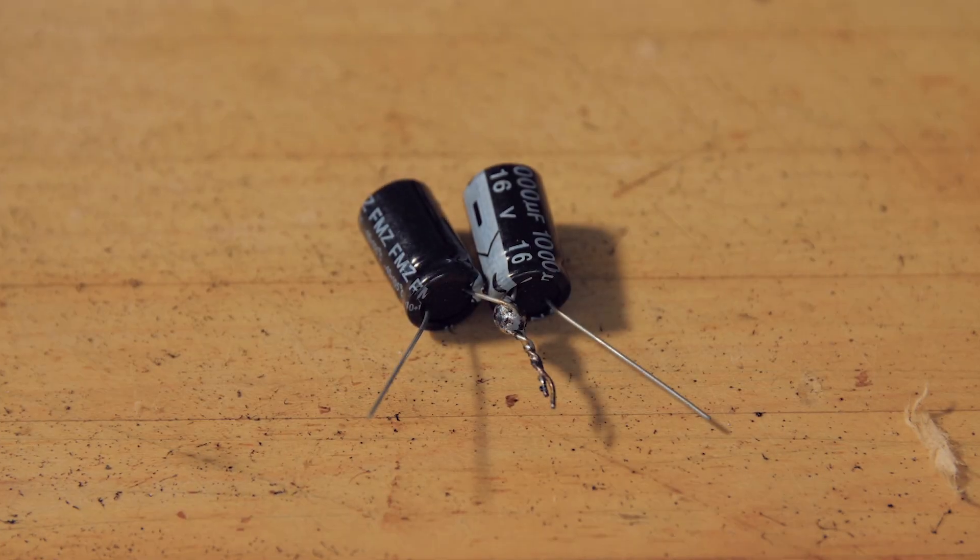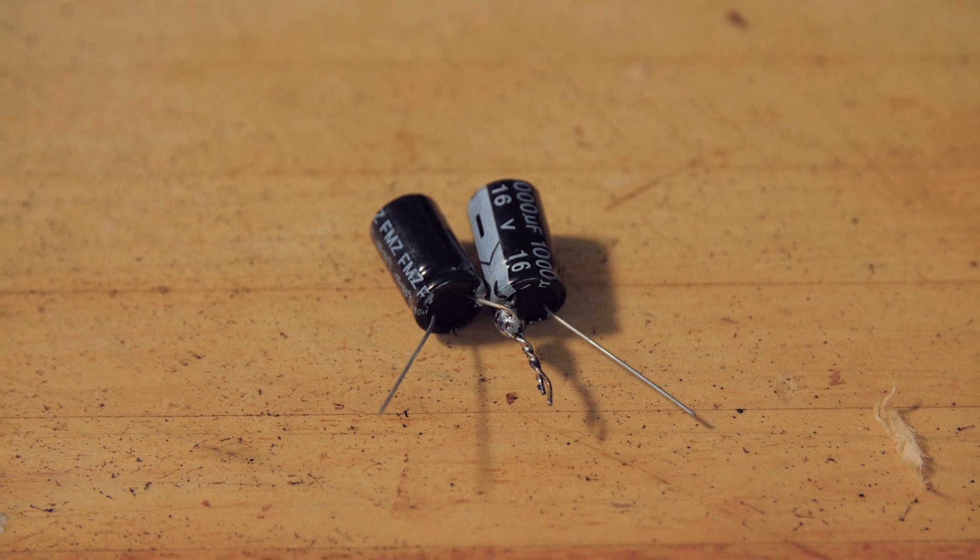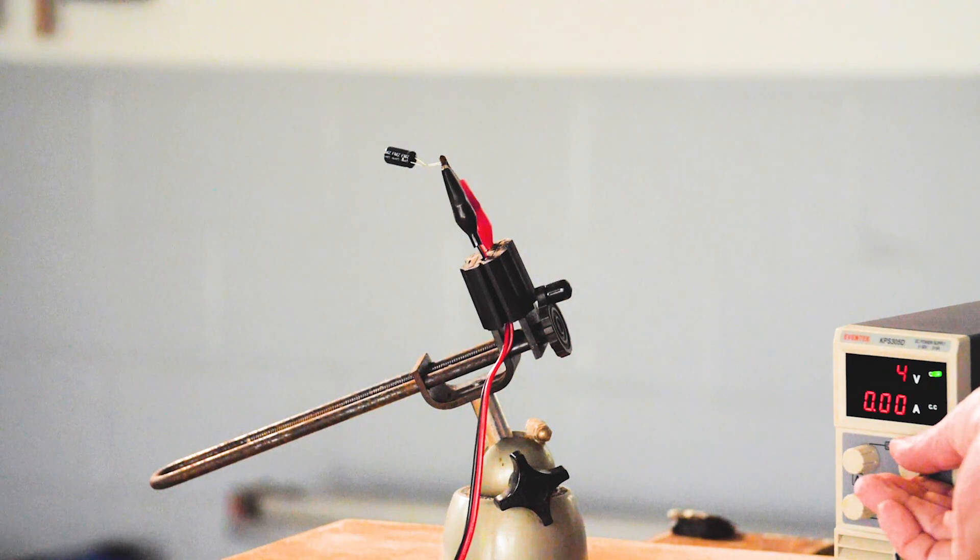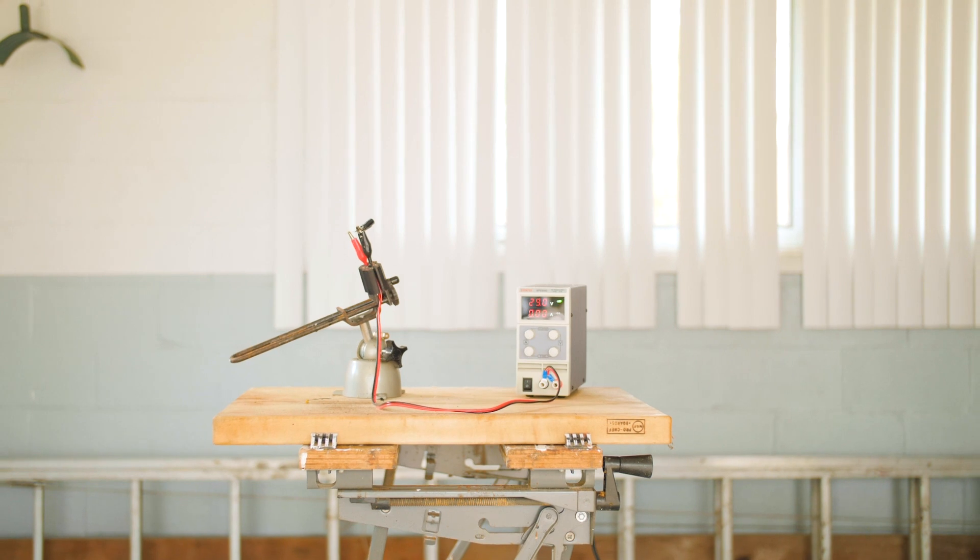We first tried two aluminum electrolytics connected anode to anode. These are 16 volt devices and we can see they handle that DC voltage just fine. Of course if you exceed that DC voltage all the bets are off.